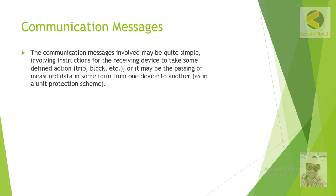Communication messages involved may be quite simple, involving instructions for the receiving device to take a defined action such as tripping or blocking, or it may involve passing measurement data from one device to another as in a unit protection scheme. For example, in line differential protection, current measurements from both ends are communicated — so the signal could be a trip signal, a blocking signal, an unblocking signal, or measurement data.